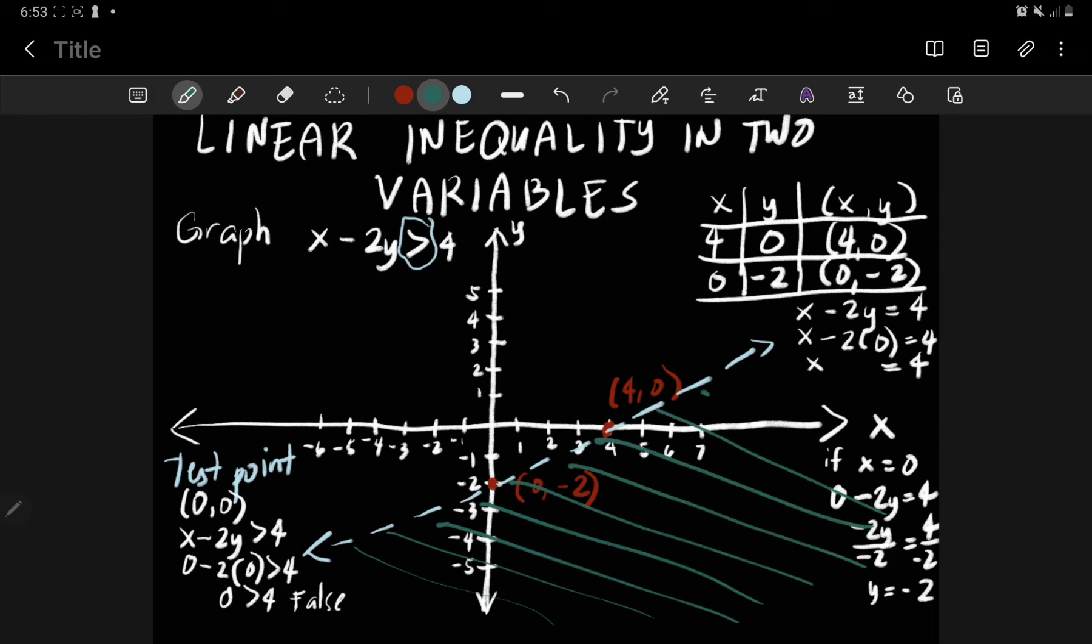So the shading part, that is the region in which you can see the solution. Any points there that is in the region, shaded region, they are a solution. But remember, the points along or in the line or on the line, they are not a solution. Since we use the dashed line, it means to say those points in the line or on the line are not included in the solution.